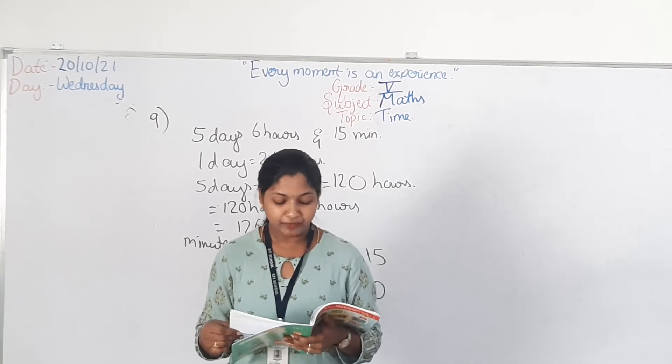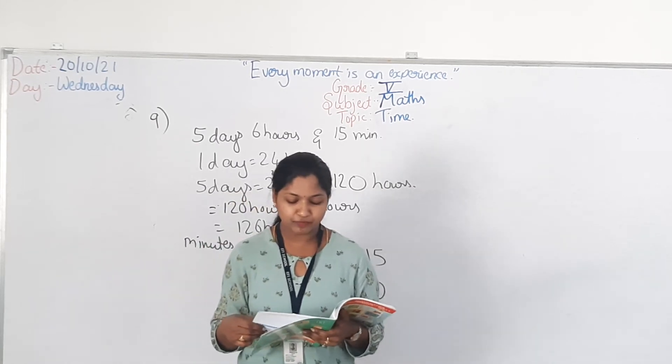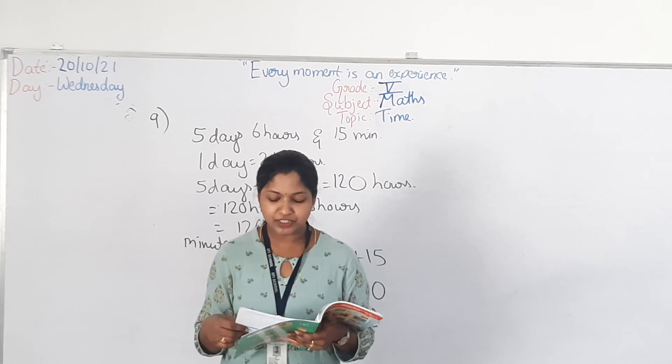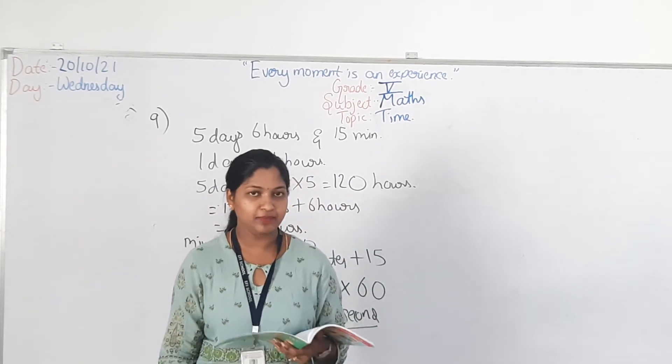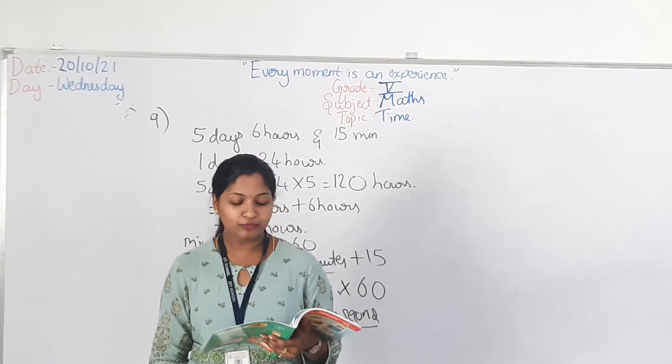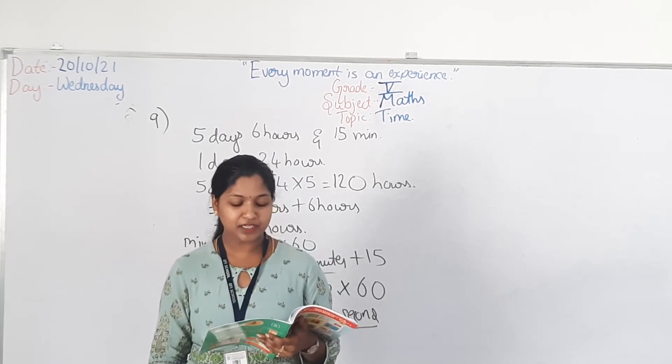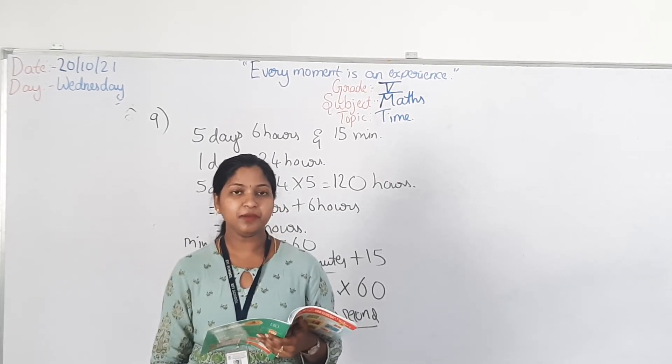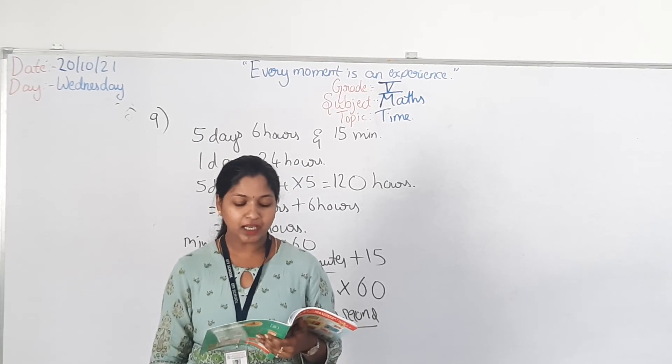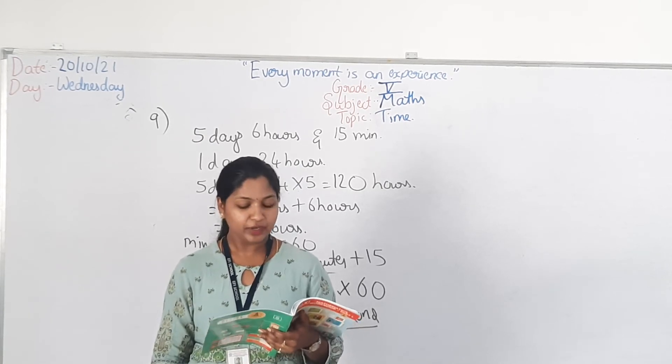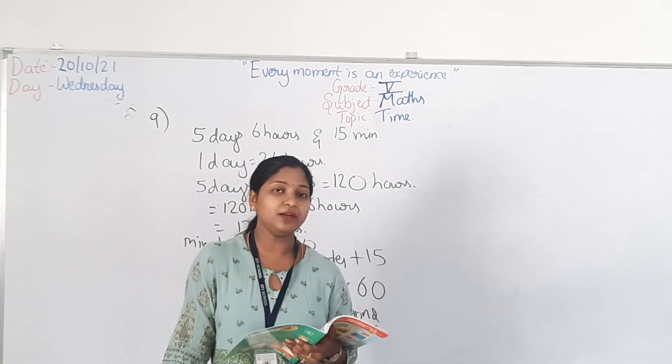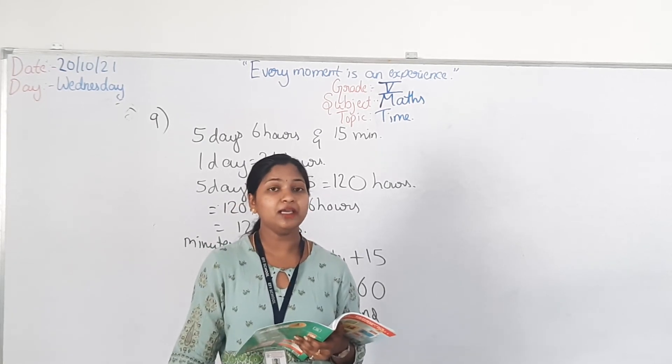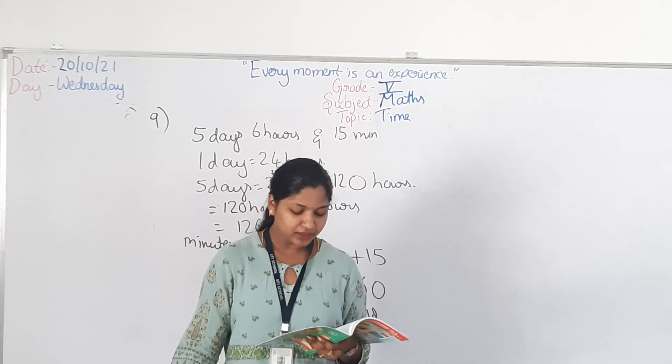Veena spends 30 minutes every day for exercising. For how much time does she exercise in 2 weeks? So, every day 30 minutes. For 1 week, 7 days. For 2 weeks means how many days? 2 weeks will be 14 days. So, 30 into 14 if you do, you can find out what is the time. Then, you will get the minutes. Then, you convert the minutes into hours by dividing by 60. Then, 19.